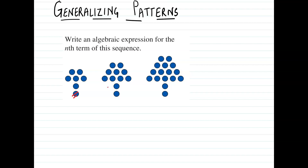Let's shift this particular dot from here to here. Now look at the pattern — we can see that every time the next number is added. One dot, two dots, three dots, and the one extra. Then again one dot, two dots, three dots, four dots, and the extra one. Then one, two, three, four, five, and the one extra.